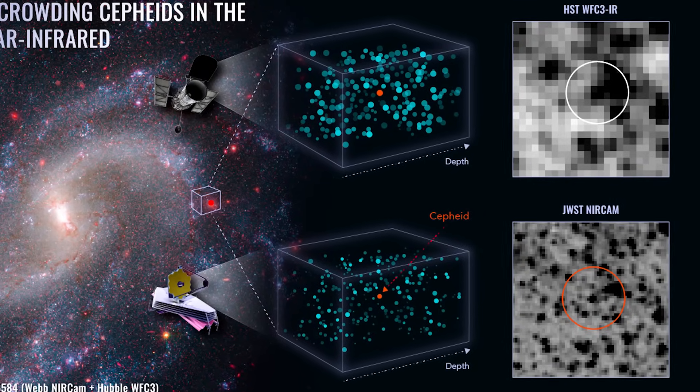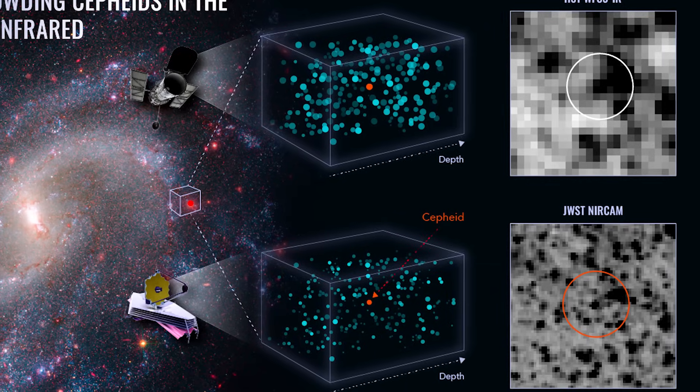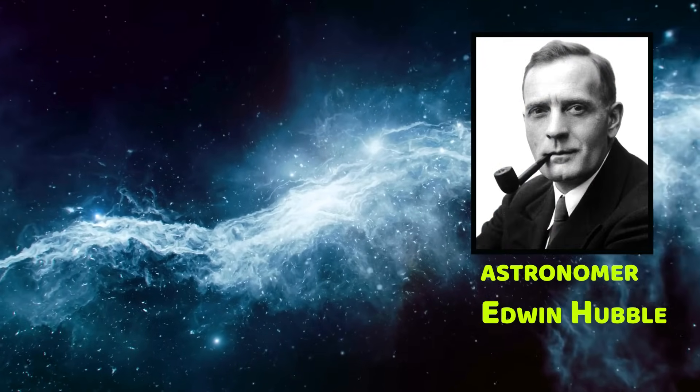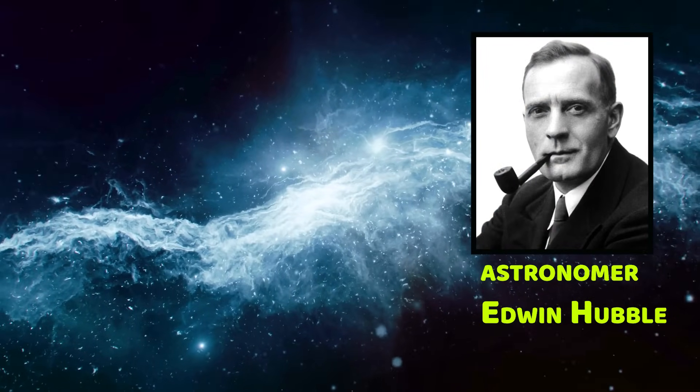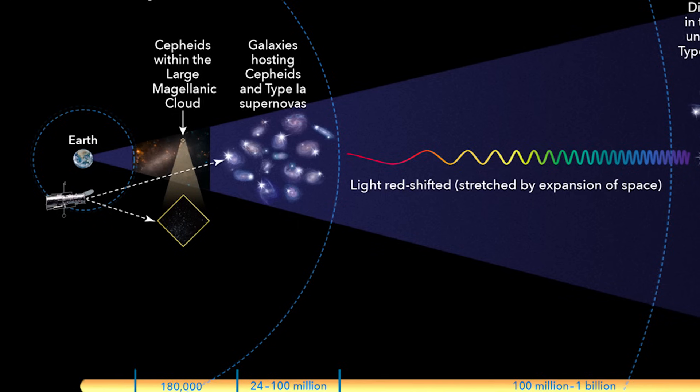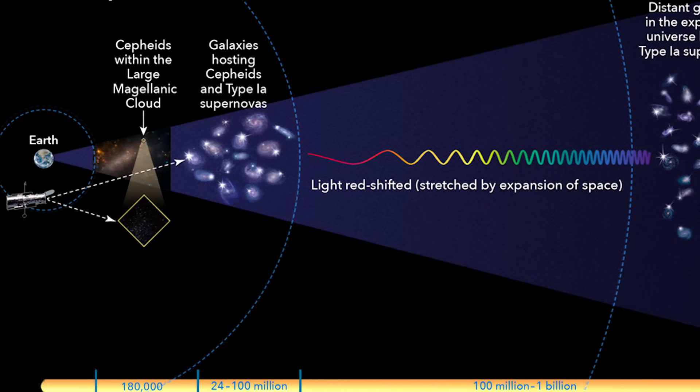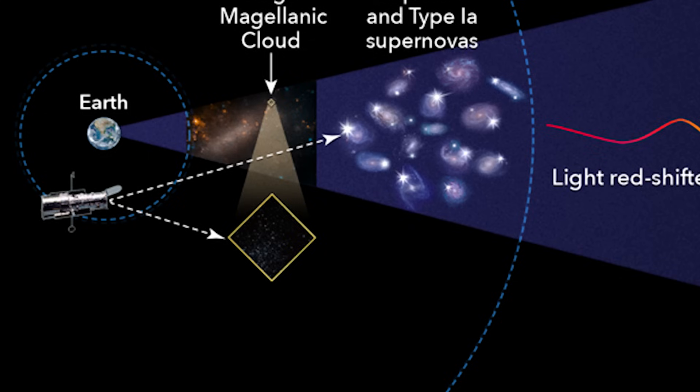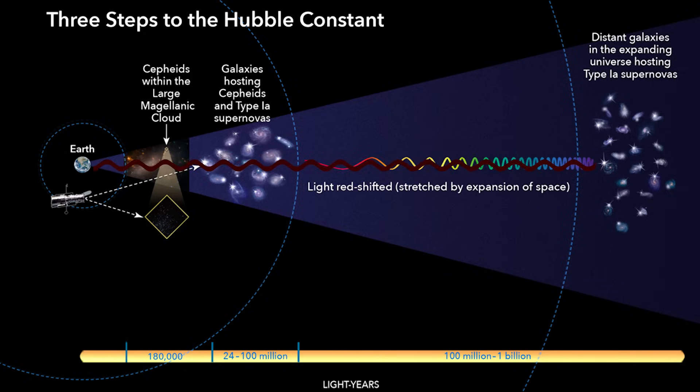The Hubble constant is a critical factor in cosmology, indicating the rate of the universe's expansion. Named after astronomer Edwin Hubble, this constant has been a subject of controversy in the scientific community. Scientists employ various methods to estimate the Hubble constant, such as observing specific points in space and measuring the distance between Earth and a distant star over the course of a year. Yet, this recent finding adds another layer of complexity to our foundational understanding of the universe, as it appears to conflict with the established Hubble constant.